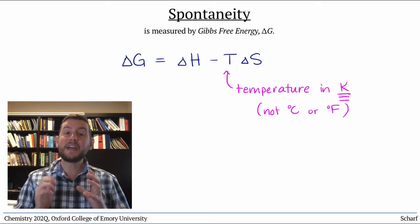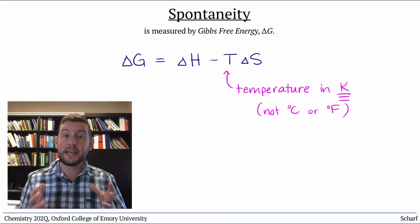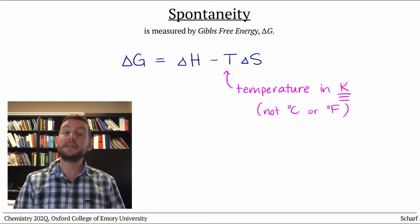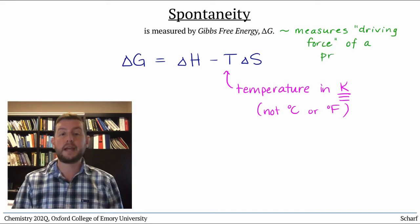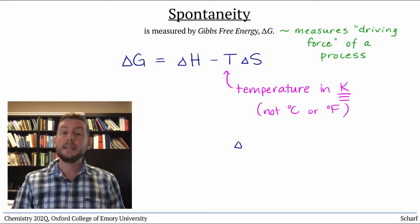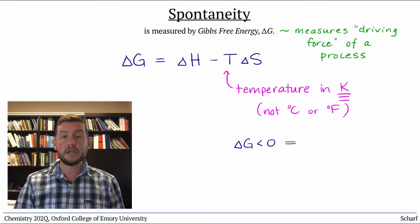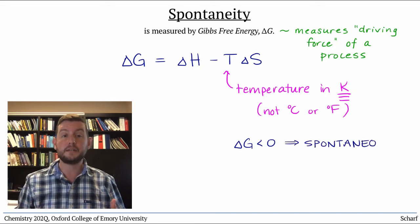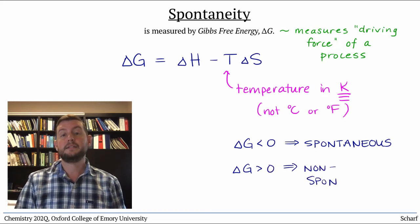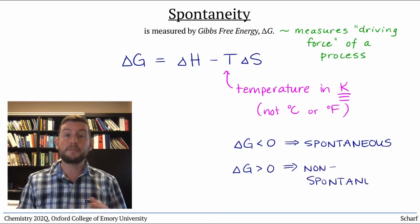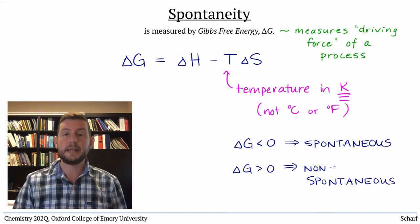Gibbs free energy is a quantitative measure of the spontaneity of a reaction — it tells you about the driving force of a reaction. Negative values of delta G mean that a reaction is spontaneous as written, while positive values mean that it's non-spontaneous; that is, the reverse reaction is spontaneous.